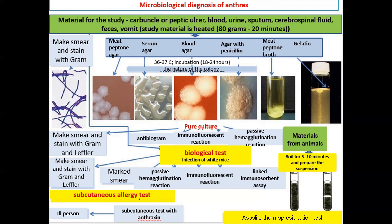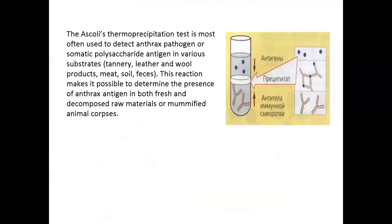A biological method (bioassay) is also carried out on guinea pigs, white mice, and rabbits. An allergy test with anthraxin is used for retrospective diagnosis after recovery. Serodiagnosis is carried out when the causative agent is not detected in the test material. The Ascoli thermoprecipitation reaction is most often used to detect the anthrax pathogen or somatic polysaccharide antigen in various substrates, including fresh and decomposed raw materials or mummified animal corpses.